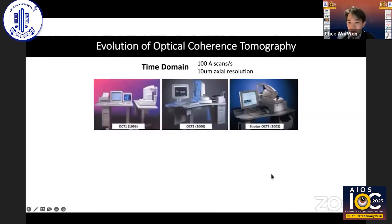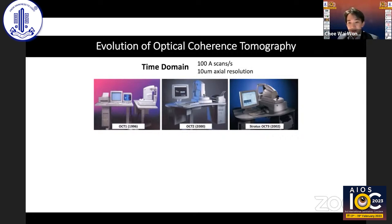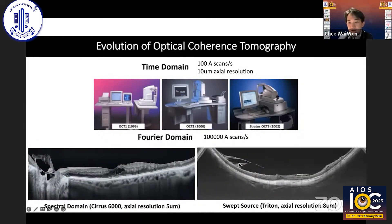OCT has undergone a lot of improvements over the past three decades. The first time-domain OCTs in the 1990s could only manage 100 scans per second at 10 microns axial resolution. It wasn't until the early 2000s with the Stratus OCT that the modality gained more traction. Today, Fourier domain OCTs — both spectral domain and swept source — are capable of 1000 times the scan speed at much higher axial resolution.